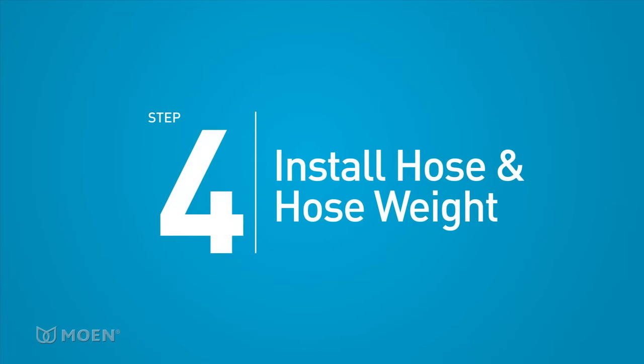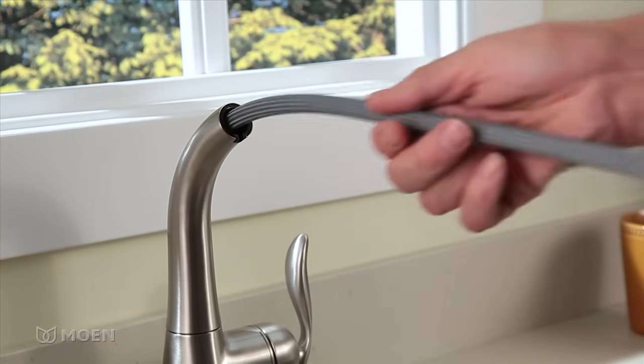Step 4. Install the pull-out hose and hose weight. Feed the small end of the pull-out hose into the faucet spout.